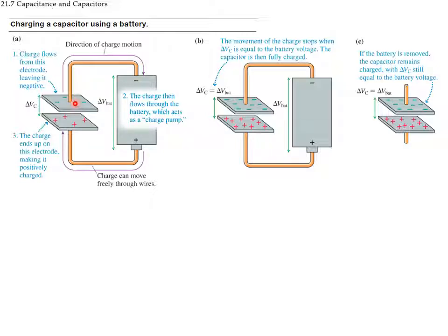This charging process continues until the voltage of the capacitor equals the voltage of the battery. Looking at the signs of the charges, it is like having one battery trying to force charges one way while the other keeps them fixed. When the two are equal, the flow stops. The movement of charges stops when the potential difference in the capacitor equals the battery voltage — at that point the capacitor is fully charged. If we then remove the battery, we are left with the two charged plates.